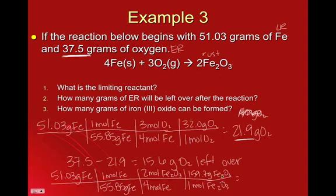So from here we just plug this in. 51.03 times 2 times 159.7, divide that by everything that's on the bottom, 55.85 and 4 equals 72.96. Let's see, we're allowed 4 sig figs. So yeah, 72.96, and that is grams of Fe2O3.